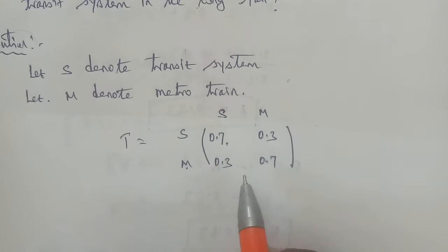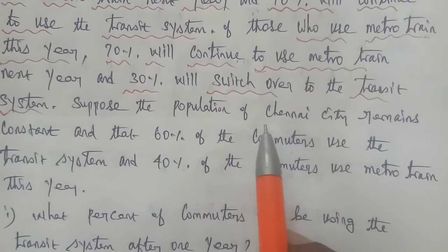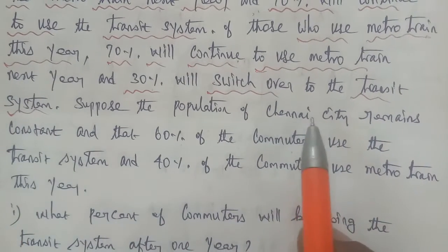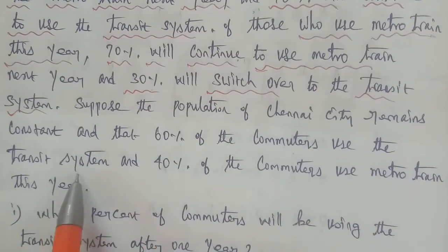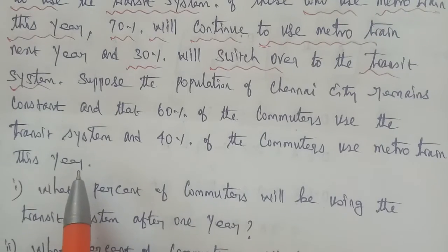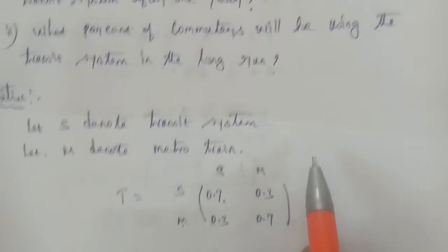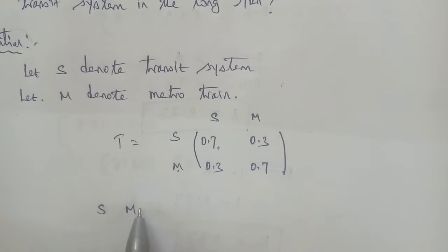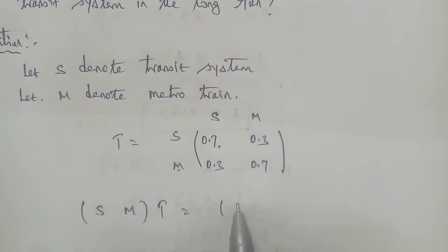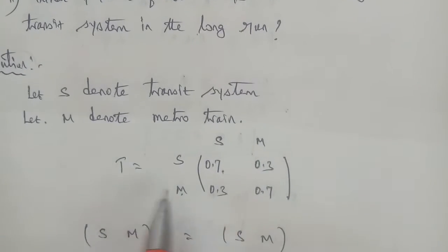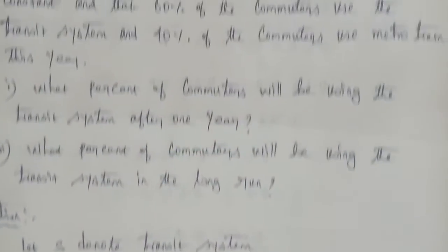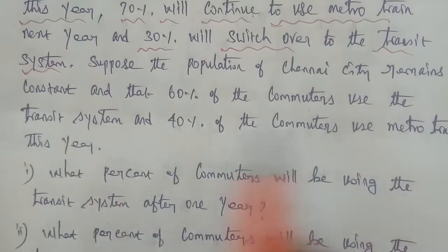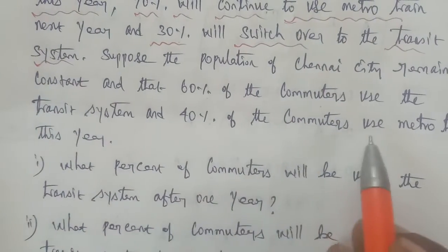So we apply the transition matrix. The transition probability matrix has columns S and M. The transition matrix T is equal to, with S and M entries: T = [[0.7, 0.3], [0.3, 0.7]]. The initial state vector is 60% using the transit system and 40% using the metro train this year.